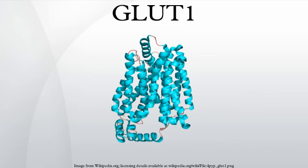GLUT1 behaves as a Michaelis-Menten enzyme and contains 12 membrane-spanning alpha helices, each containing 20 amino acid residues. A helical wheel analysis shows that the membrane-spanning alpha helices are amphipathic, with one side being polar and the other side hydrophobic. Six of these membrane-spanning helices are believed to bind together in the membrane to create a polar channel in the center through which glucose can traverse, with the hydrophobic regions on the outside of the channel adjacent to the fatty acid tails of the membrane.